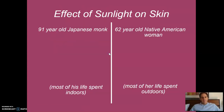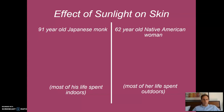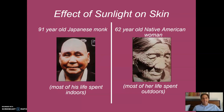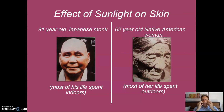Sunlight is not good for your loose connective tissue — it can actually damage it, which has some interesting effects. To illustrate this, consider a 91-year-old Japanese monk who spent most of his life indoors away from the sun, versus a 62-year-old Native American woman who spent most of her life outdoors. His skin is noticeably smoother despite being 30 years older. Sunlight damages that loose connective tissue, and since it holds your skin on, as it gets damaged the skin starts to sag and that's what gives you wrinkles.